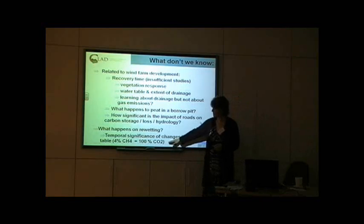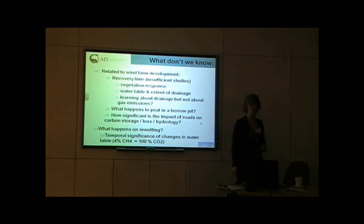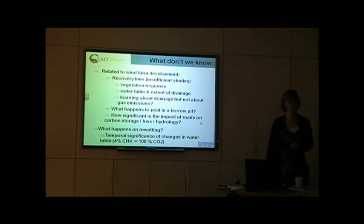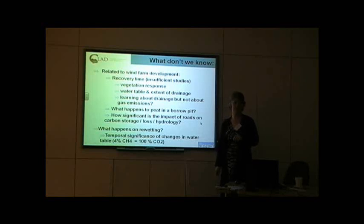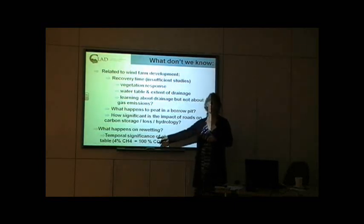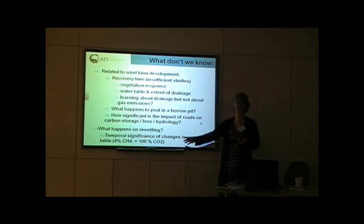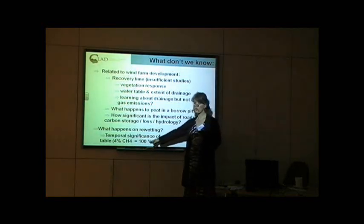You only need 4% of methane to equate to 100% of CO2 in terms of global warming potential. Because methane comes out of the atmosphere faster, that 4% to 100% relationship is over a period of about 100 years. So in these long-term systems, you need to relate that figure to a fine timescale. The global warming potential of methane is more significant at 25% — meaning net like-for-like emissions, the equivalent global warming potential is 4% of methane.